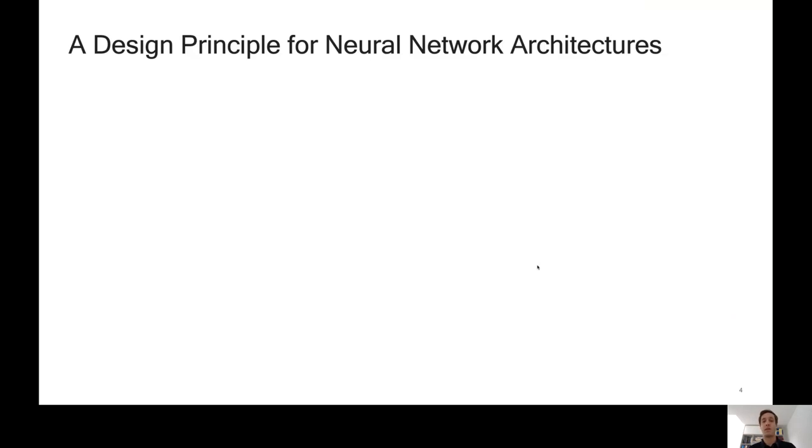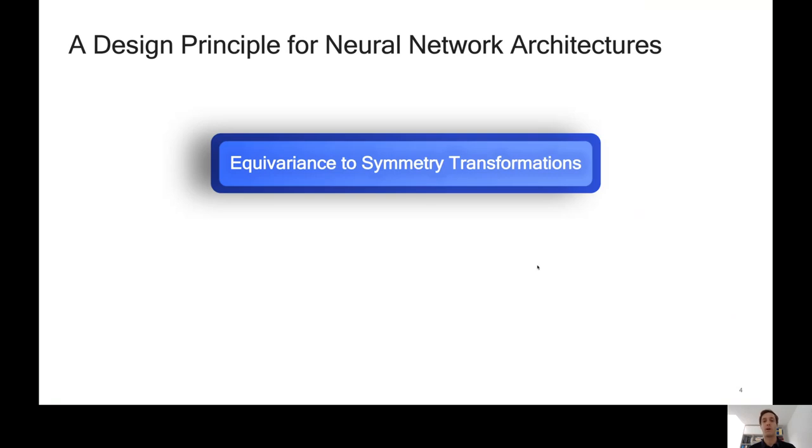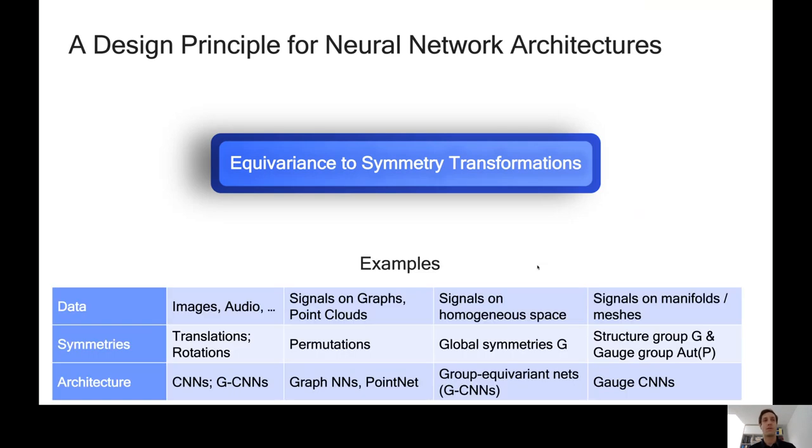Those are the symmetries that we want to exploit in order to get better statistical efficiency, to ease learning, to help the network automatically understand that these rotated objects or translated objects are really the same thing without requiring extra data to learn from them. This provides what I think of as a design principle for neural network architectures. Whenever you're faced with a new problem, the first question to ask is what are the symmetry transformations? And secondly, how can I build a network that's equivariant to those symmetries, i.e. respects those symmetries?